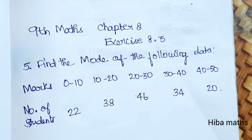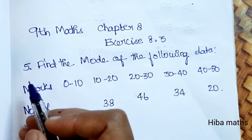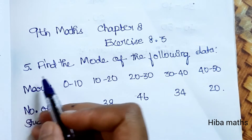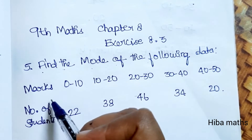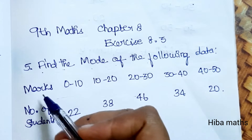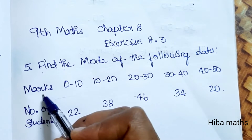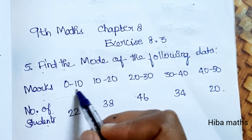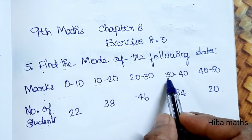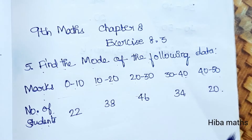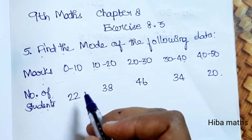Hello students, welcome to class 9 standard, chapter 8, exercise 8.3, fifth question. Find the mode of the following data. A table is given with columns for marks and number of students. The marks intervals are 0 to 10, 10 to 20, 20 to 30, 30 to 40, and 40 to 50.